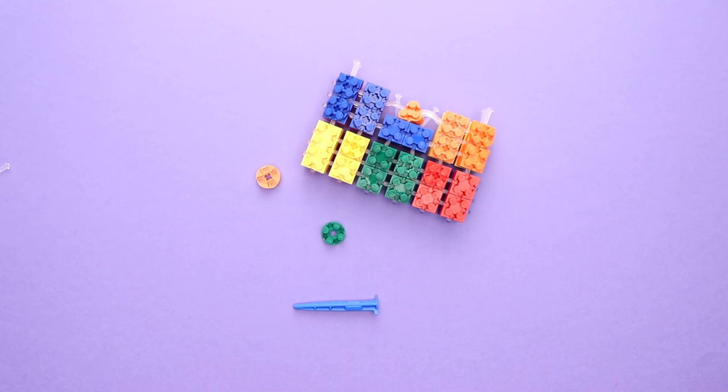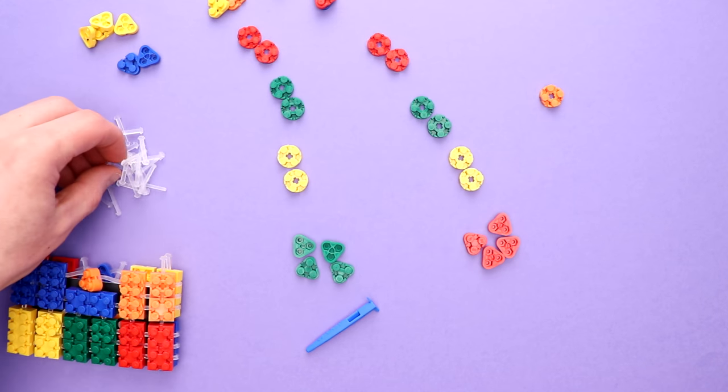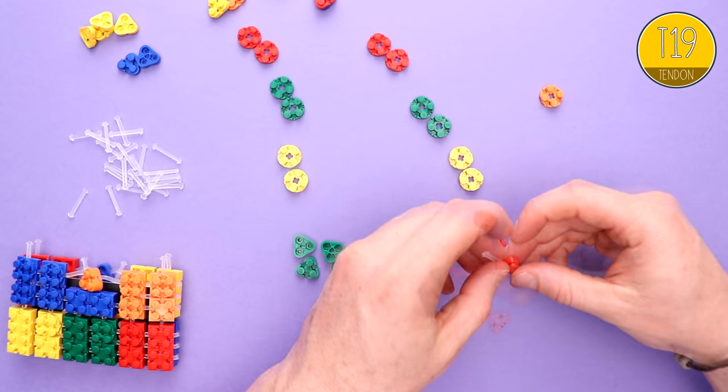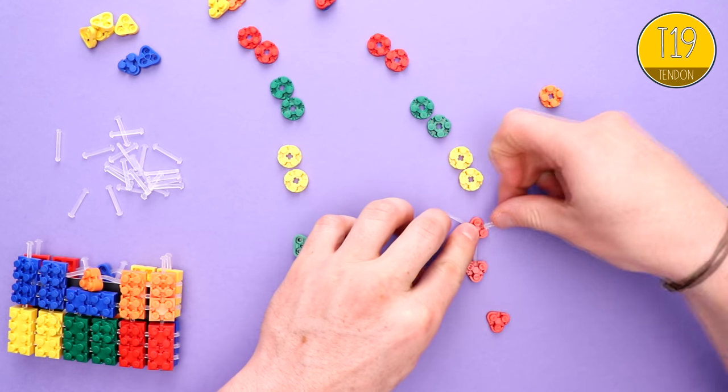And there we have it, the body of our handbag. Now for the second part of our build. What we're going to do is connect a whole bunch of T19 tendons and bricks together that's going to create the strap for our handbag.